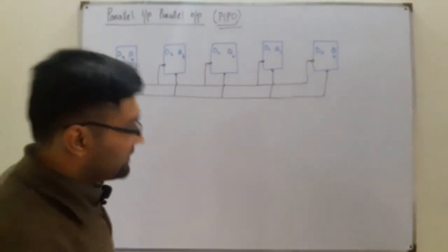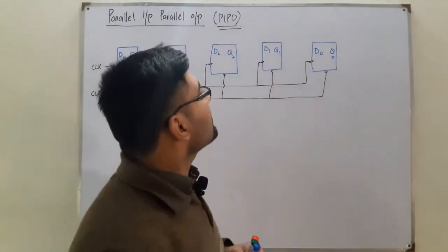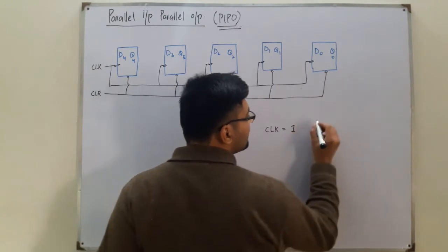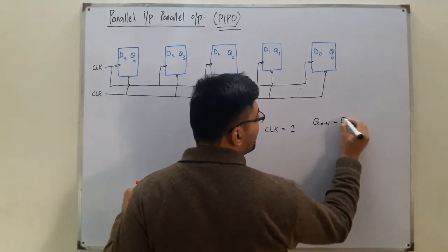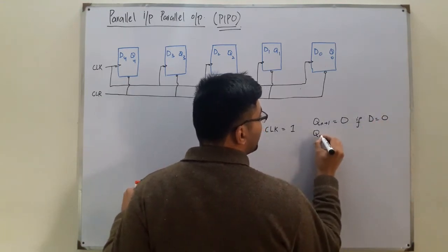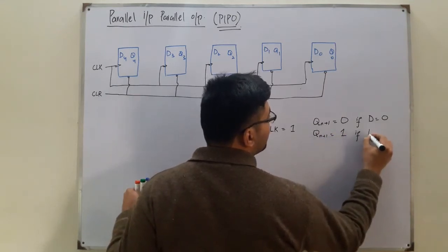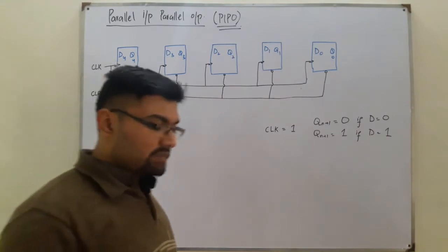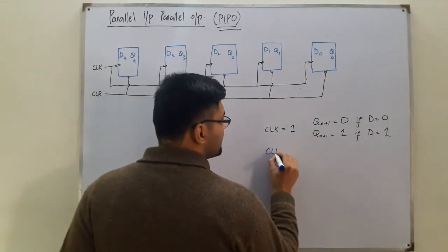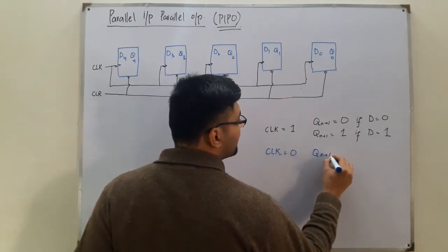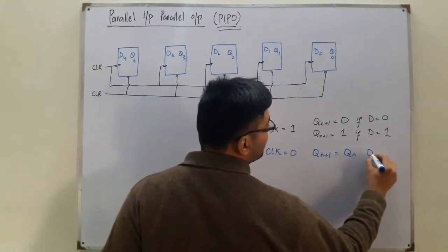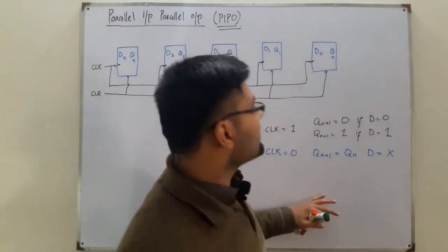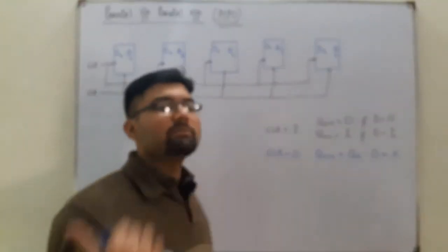As mentioned in the previous video, for the D flip-flop: when the clock is 1, Q(n+1) equals 0 if D is 0, and Q(n+1) equals 1 if D is 1 — meaning the output equals D when clock is 1. When clock is 0, Q(n+1) equals the previous state, regardless of D.